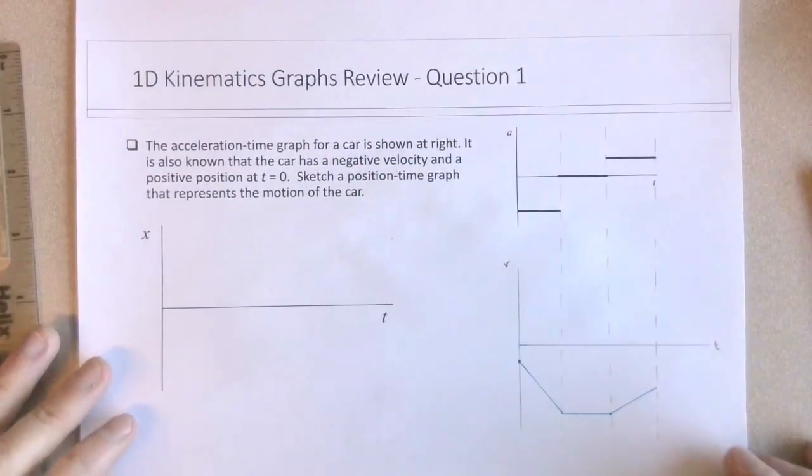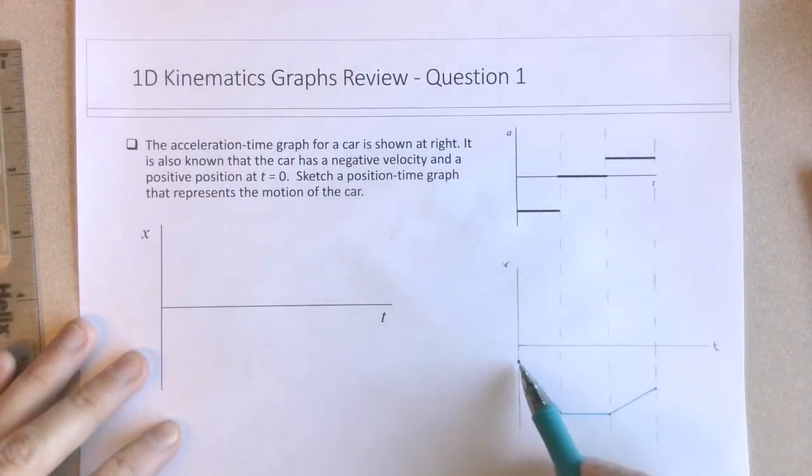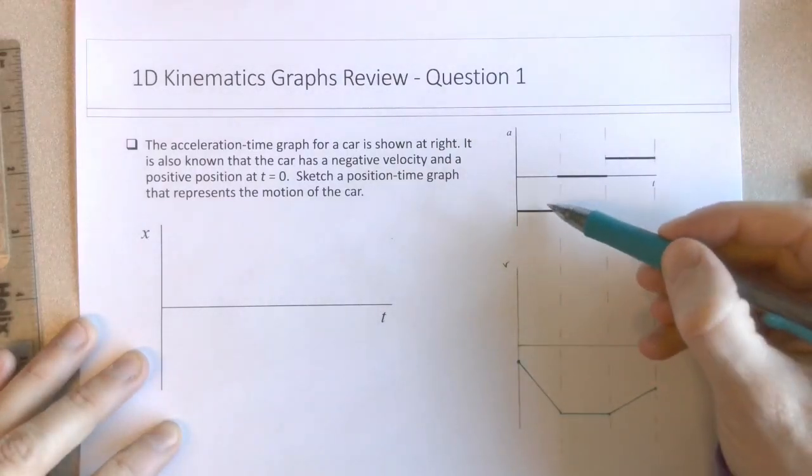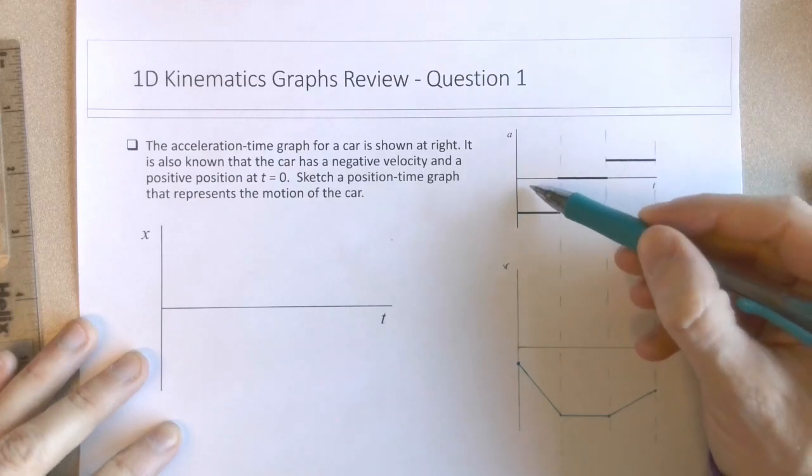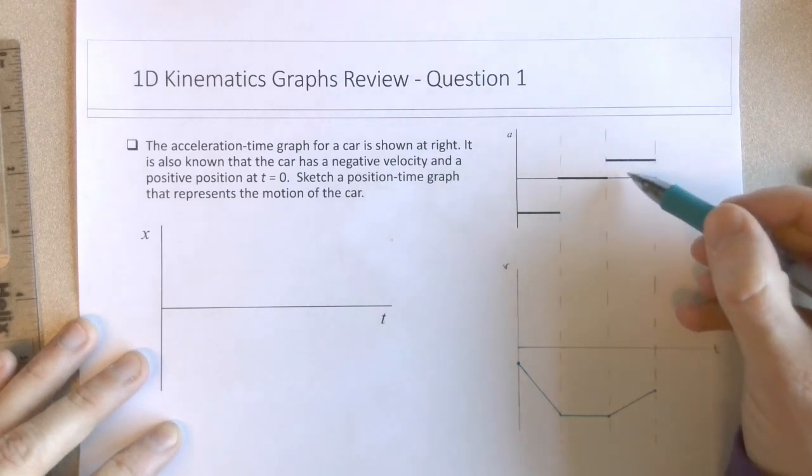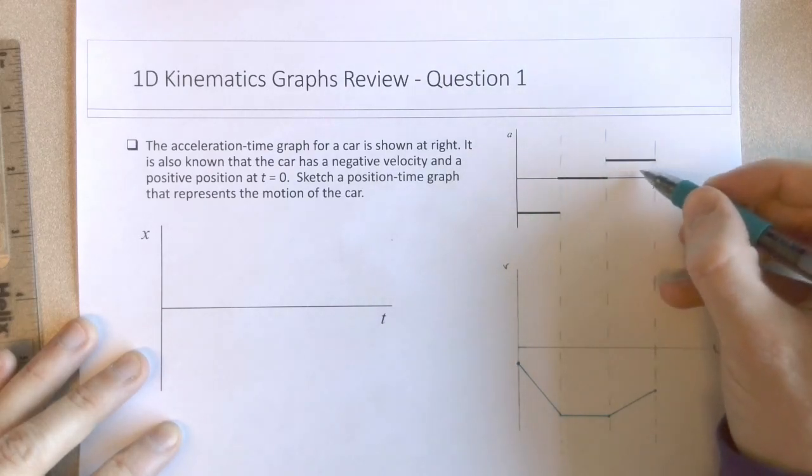And hopefully this would make sense that the velocity ends up being more negative than where it started. Again, the area underneath the At curve is the delta V, and we've got a large area here where the velocity becomes more negative than where it started,